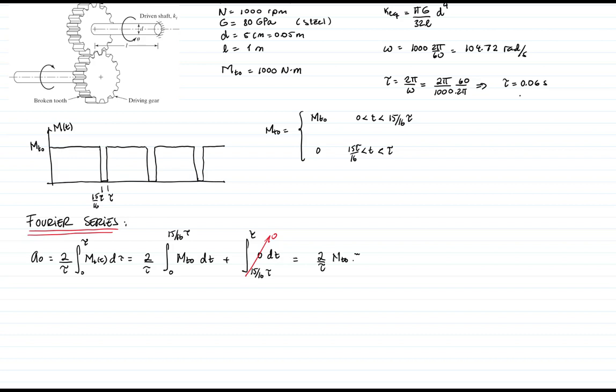And then I have 2/τ, and this is 15/16 τ. Tau cancels with tau, and I end up with 2 times 15/16. Therefore, my first coefficient is just mₜ times 15/16.